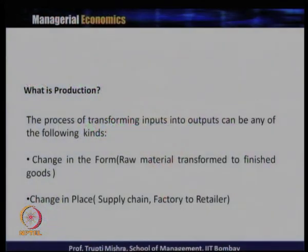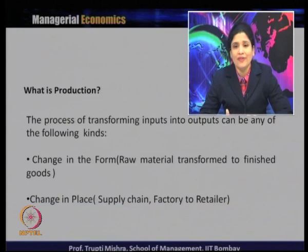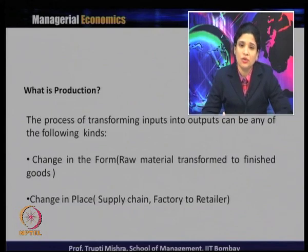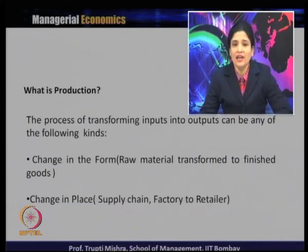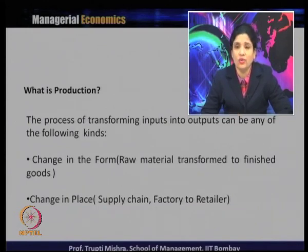This process, whether transforming inputs into outputs or intermediary products into final products, is basically of two kinds. One is when there is a change in the form, and the second is when there is a change in the place. In the case of change in form, raw material is transformed to finished goods — the inputs get transformed into finished goods entirely.